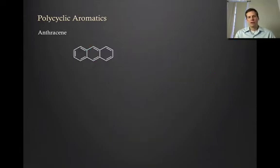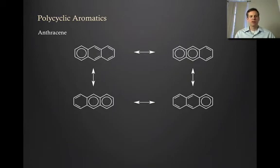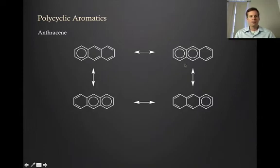We can consider another polycyclic aromatic: anthracene. Now we have what looks like three benzene rings fused together. We can consider the possible resonance forms for anthracene by shifting the double bonds around, and you'll see that there are four resonance forms. If we put in our donuts for any ring that looks like a complete benzene, you'll find that in two of these resonance forms only a single ring feels benzene-like, and in another two resonance forms, two of the rings look completely aromatic.